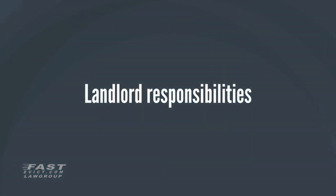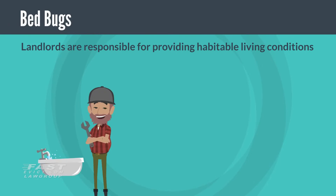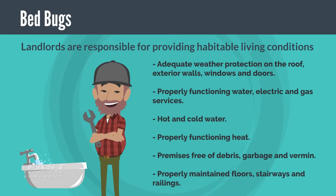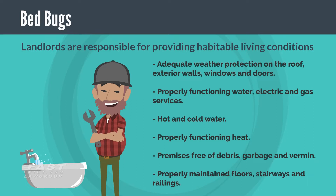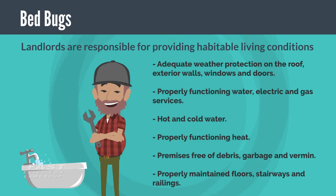Landlord Responsibility: Landlords in California are required by state law Civil Code 1941.1 to provide habitable living conditions for their tenants. This includes adequate weather protection on the roof, exterior walls, windows, and doors; properly functioning water, electric, and gas services; hot and cold water; properly functioning heat; premises free of debris, garbage, and vermin; and properly maintained floors, stairways, and railings.